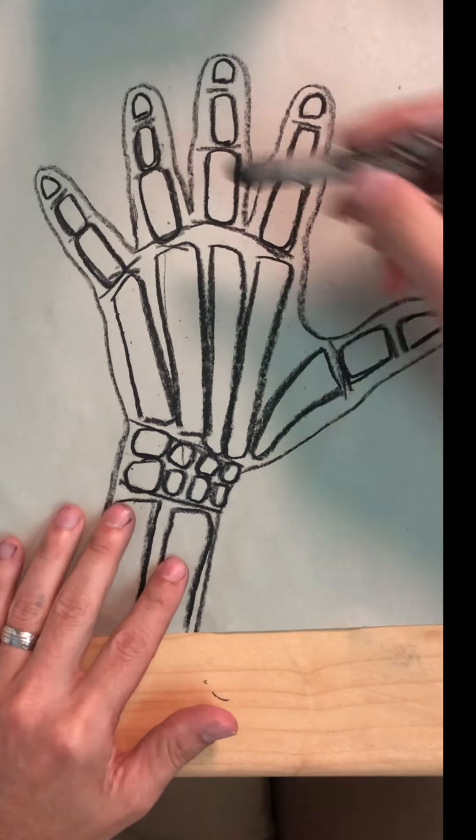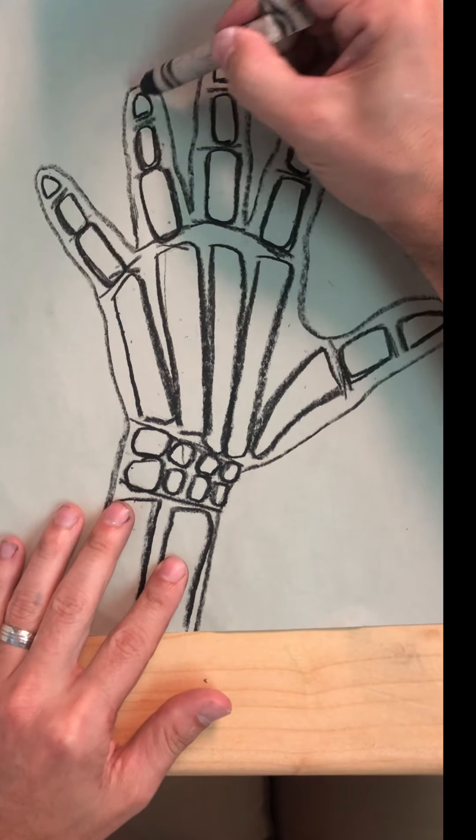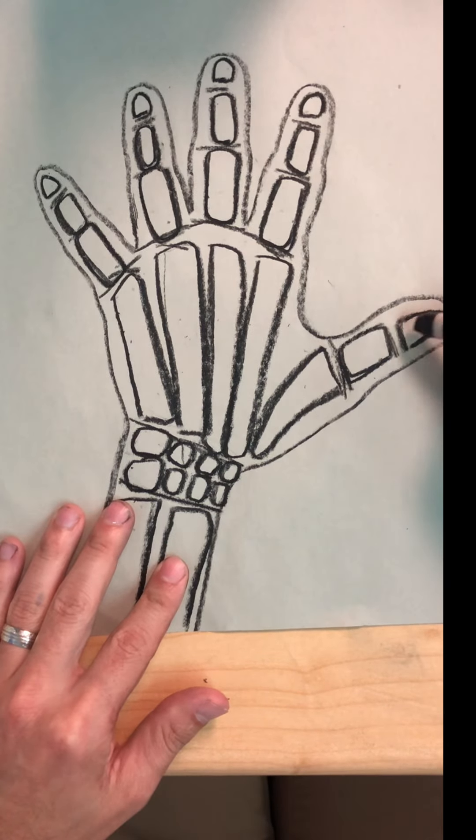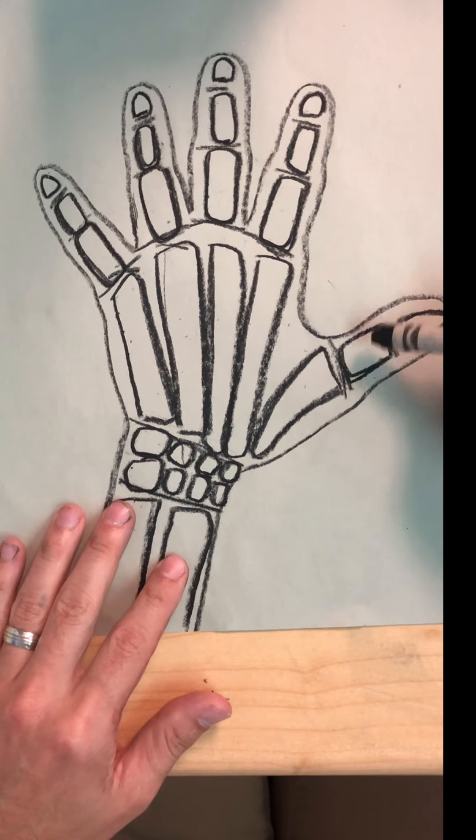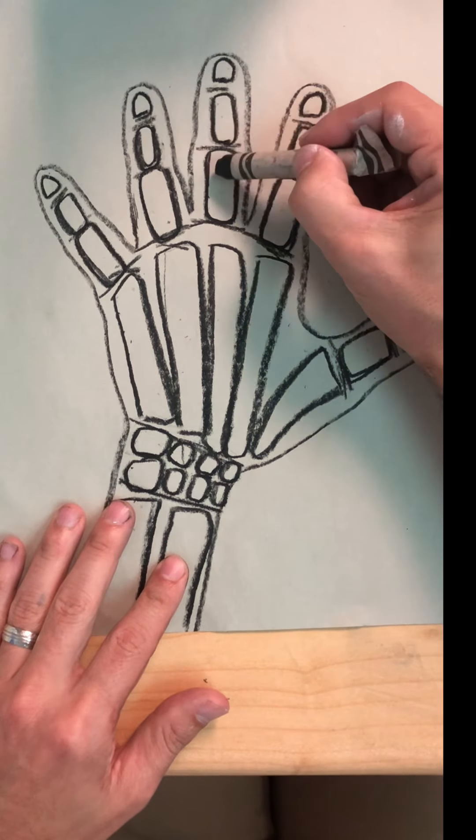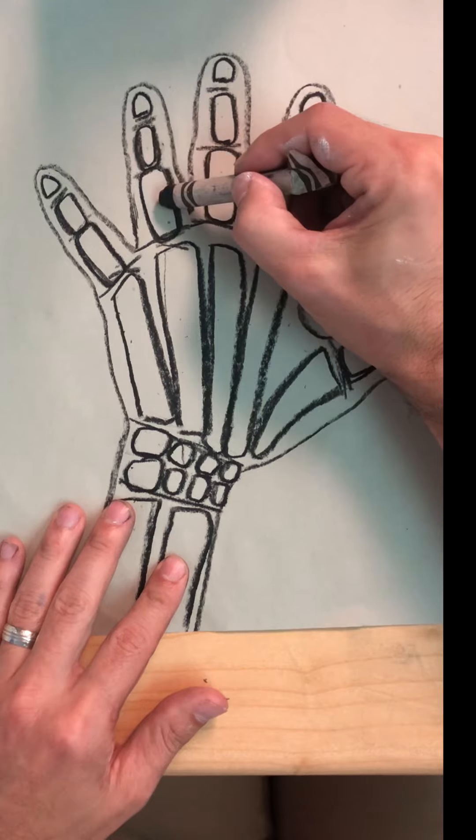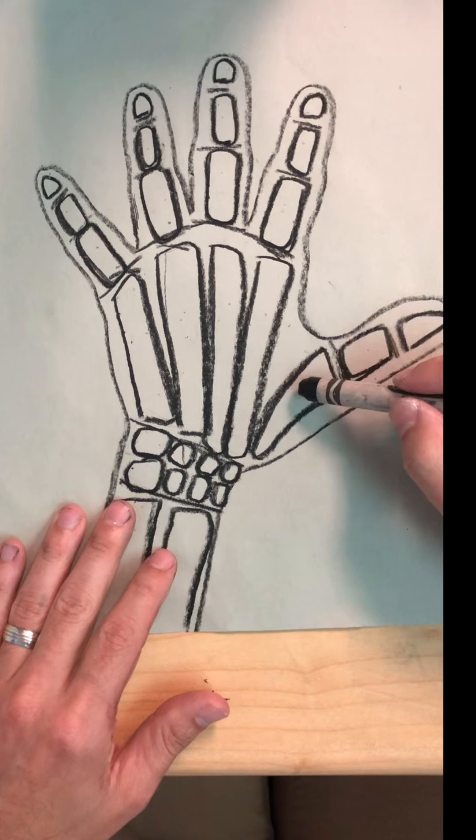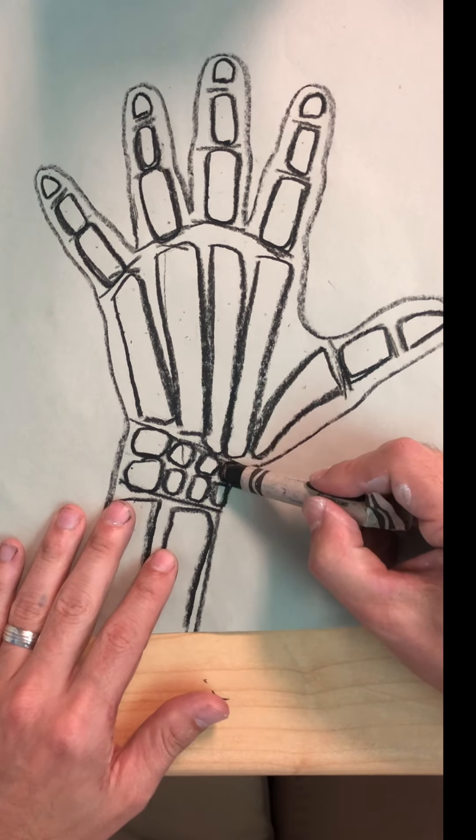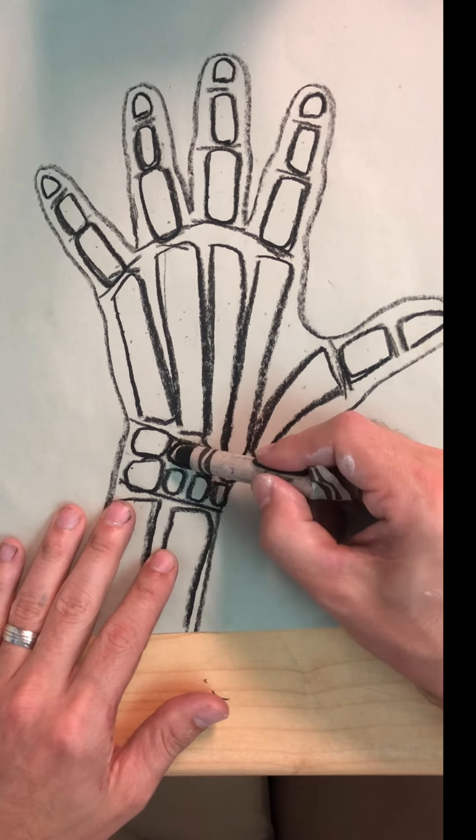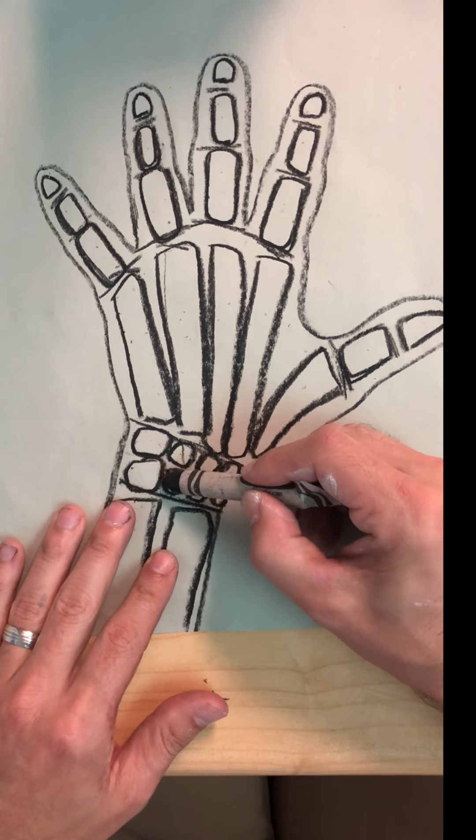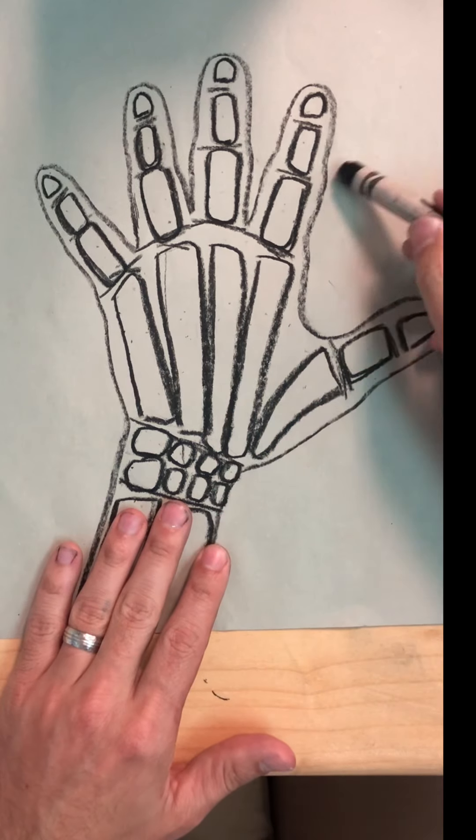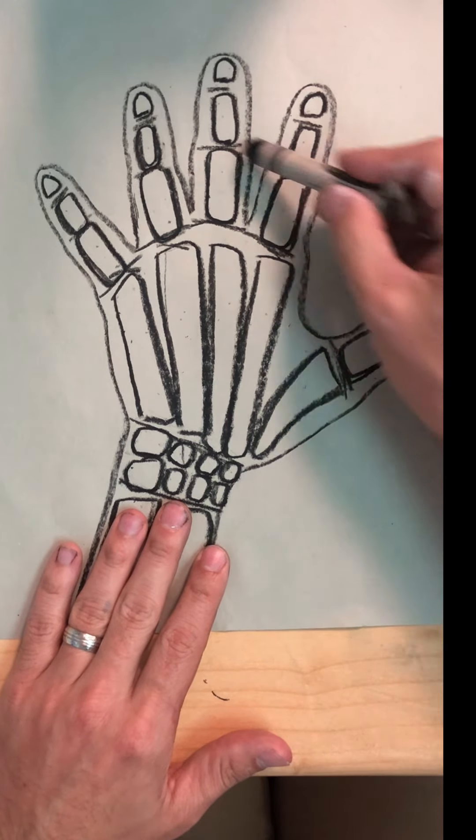Let's start with our fingertips. 1, 2, 3, 4, 5, 6, 7, 8, 9, 10, 11, 12, 13, 14, 15, 16, 17, 18, 19, 20, 21, 22, 23, 24, 25, 26, 27. There are 27 bones inside of your hand.